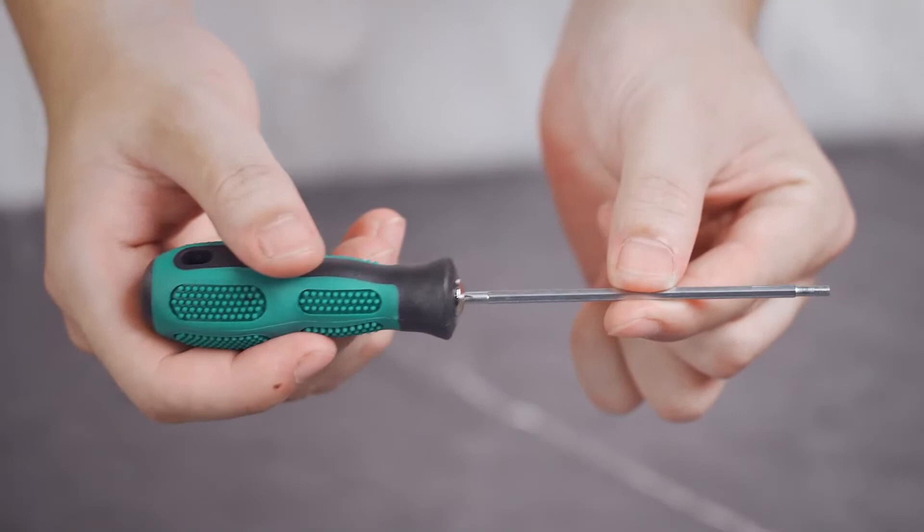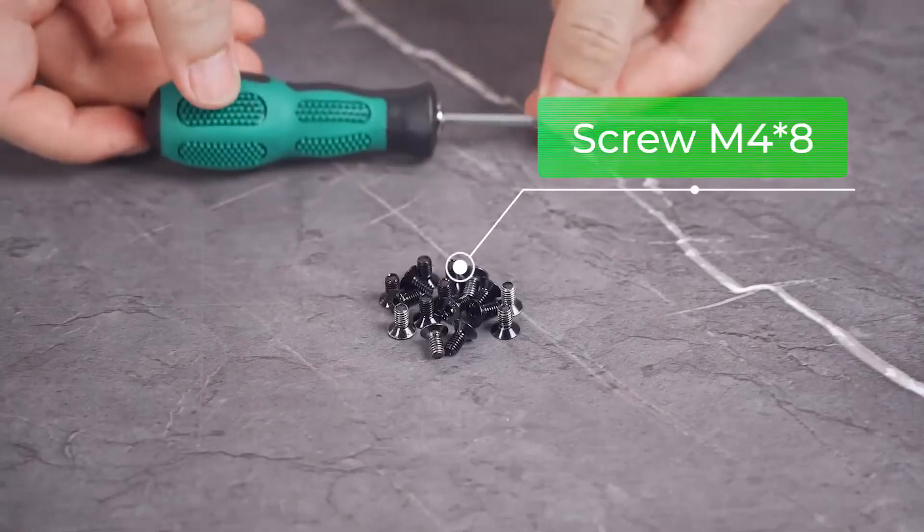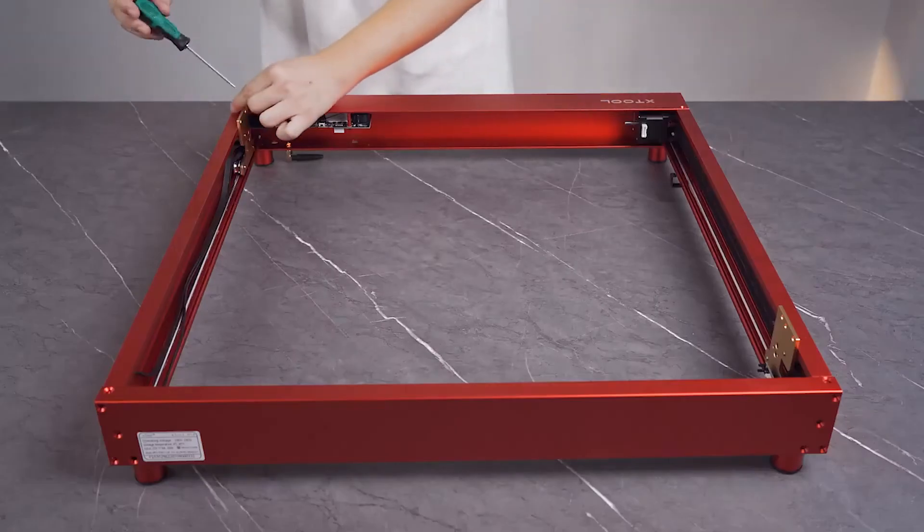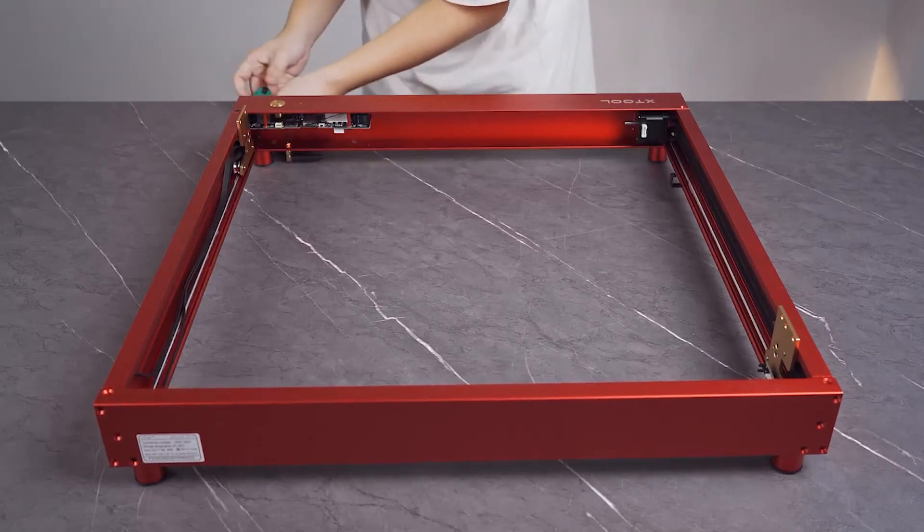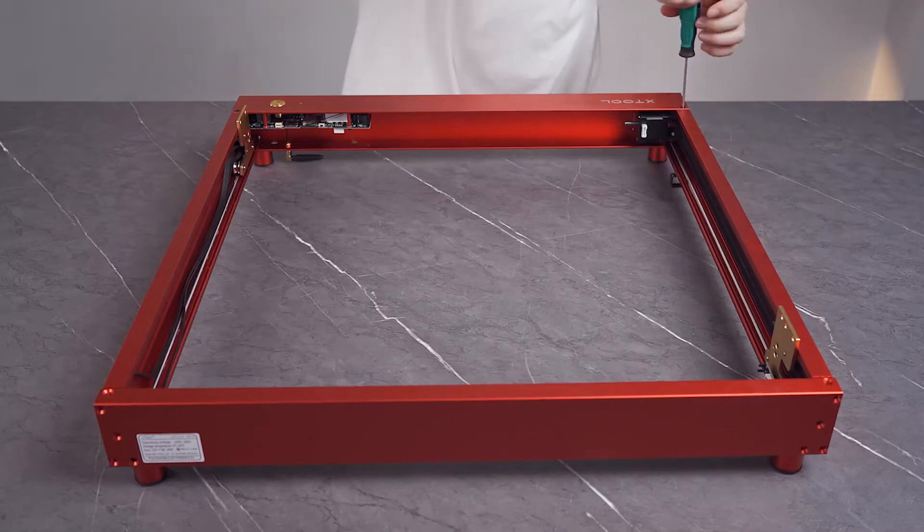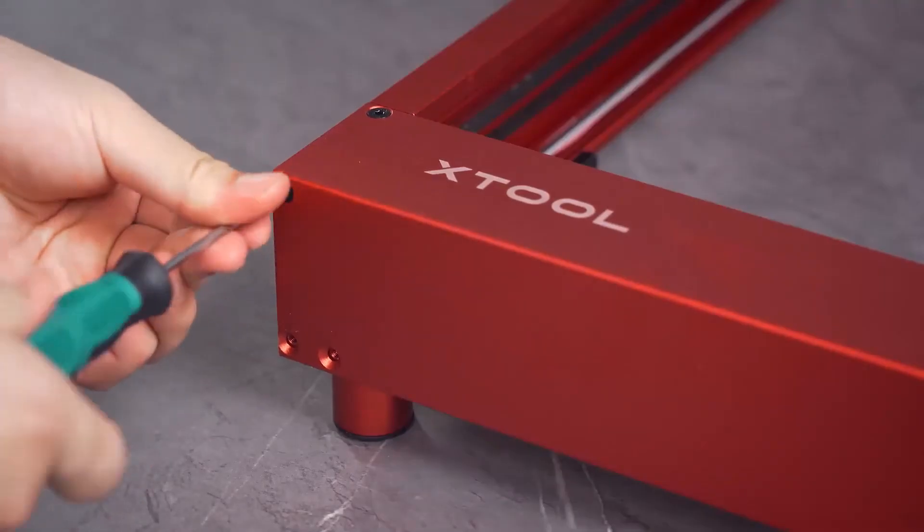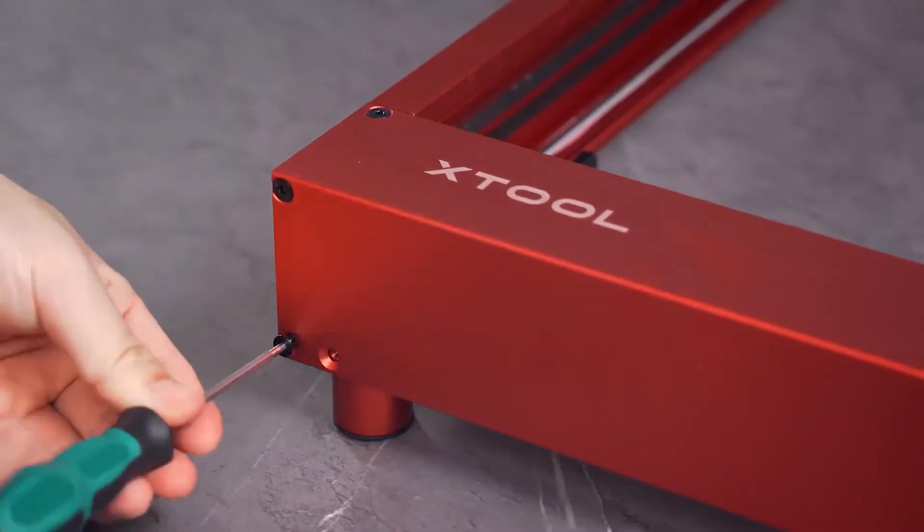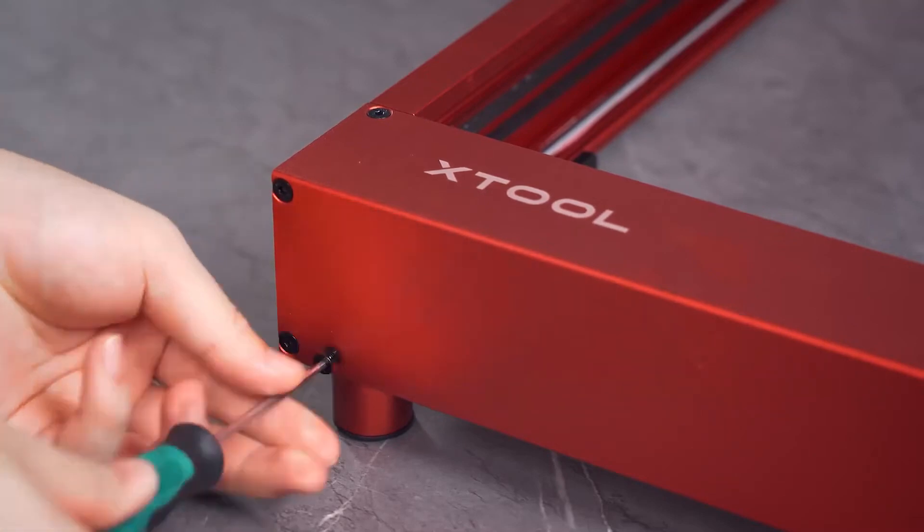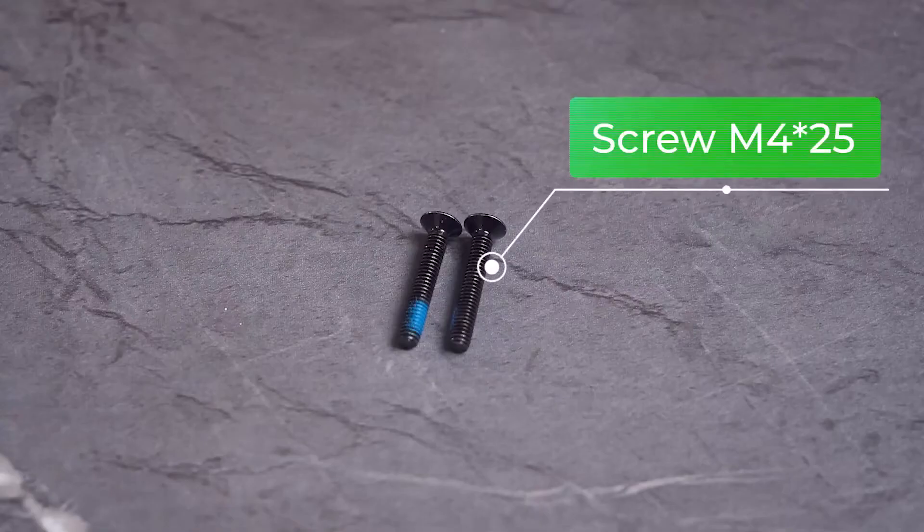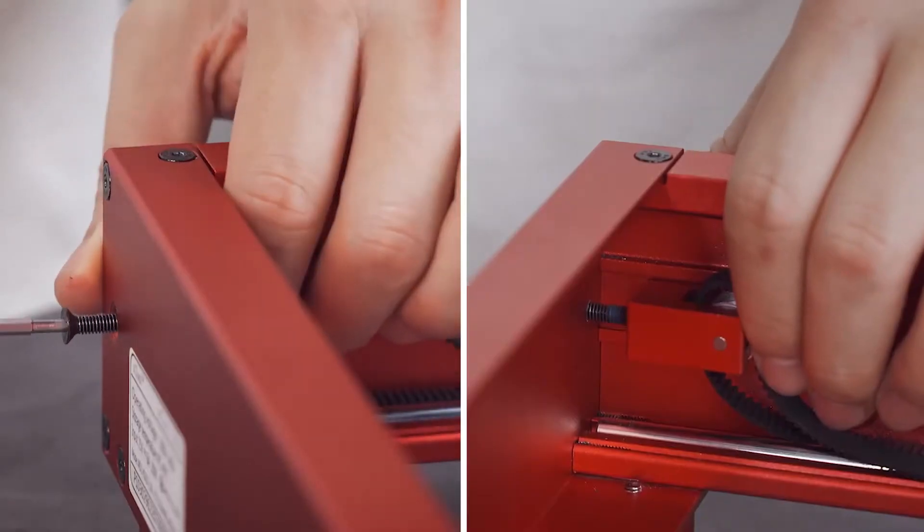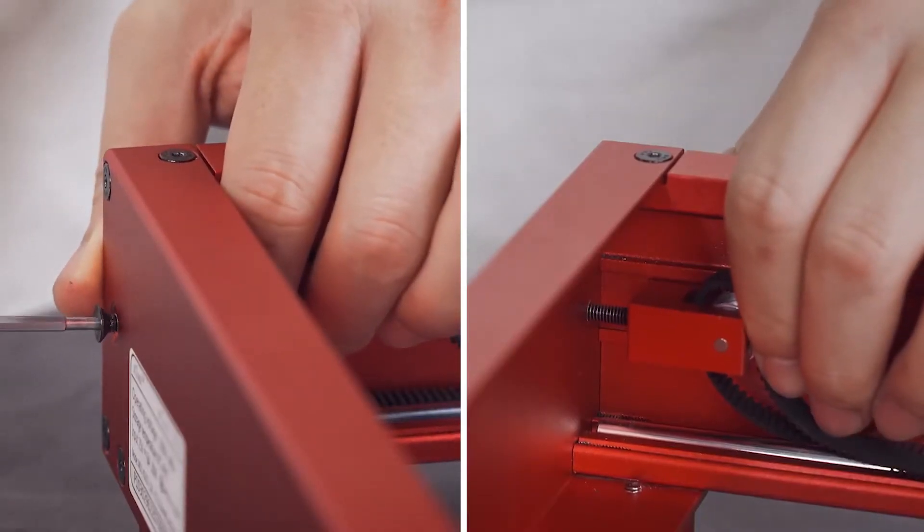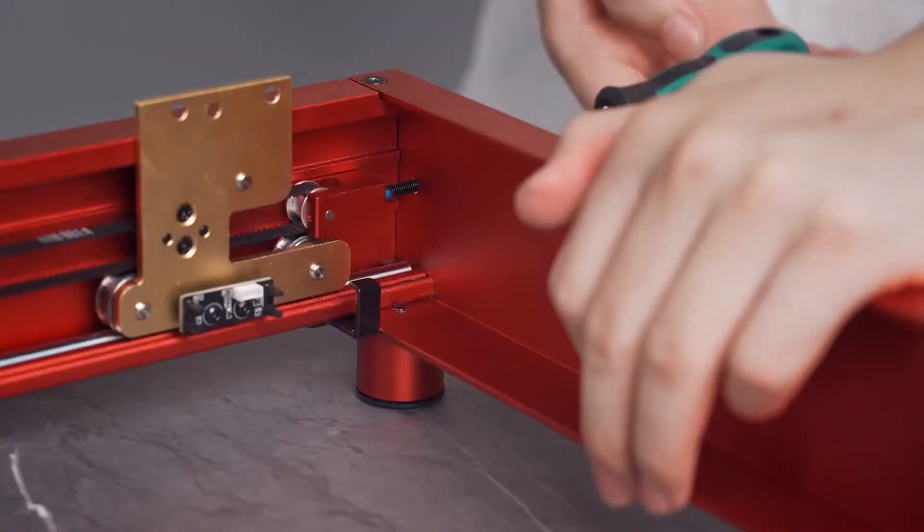Use screws to hold the side plates together. Use screws to fit the idler pulleys. The screw is used to set the tension of the timing belt. Do not fully tighten it, otherwise the timing belt may be damaged.